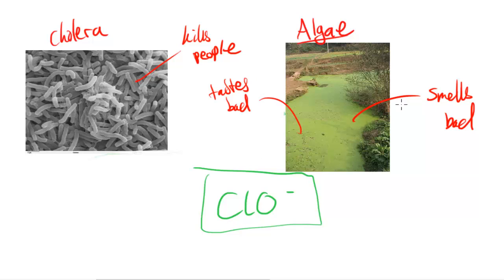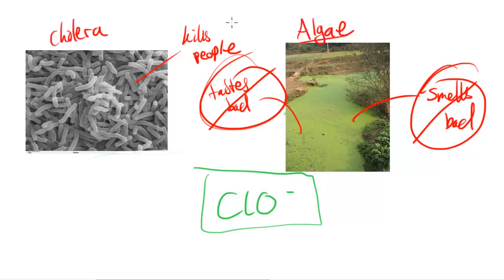Algae tastes bad and smells bad. And what these chlorine ions, chlorate ions can do is they can eliminate these bad smells and tastes. And they can help less people get killed by cholera.